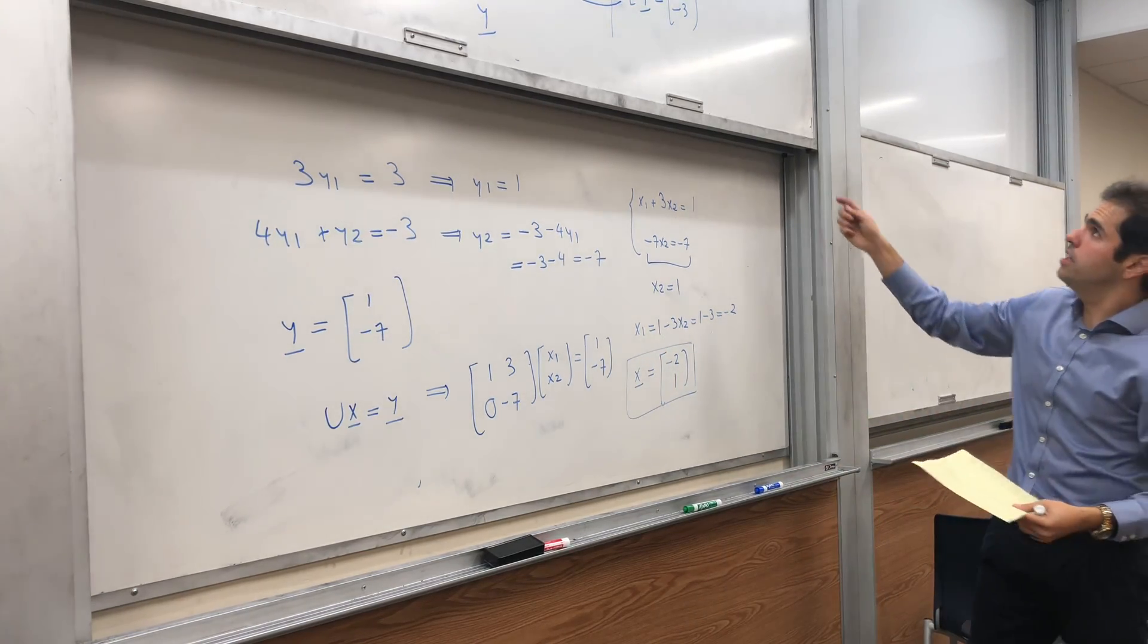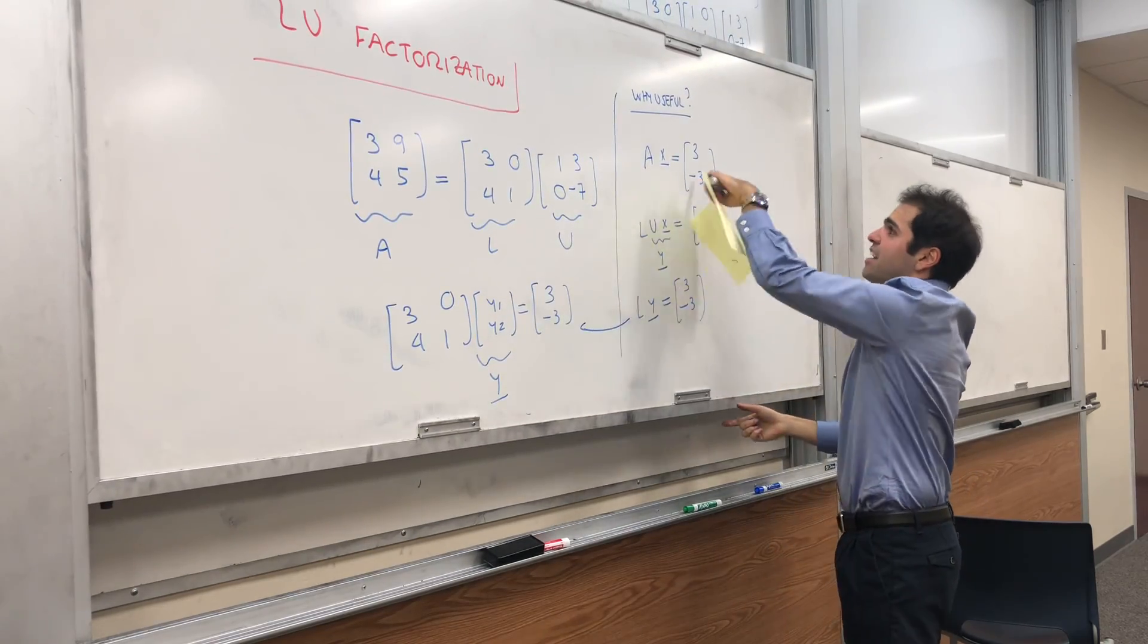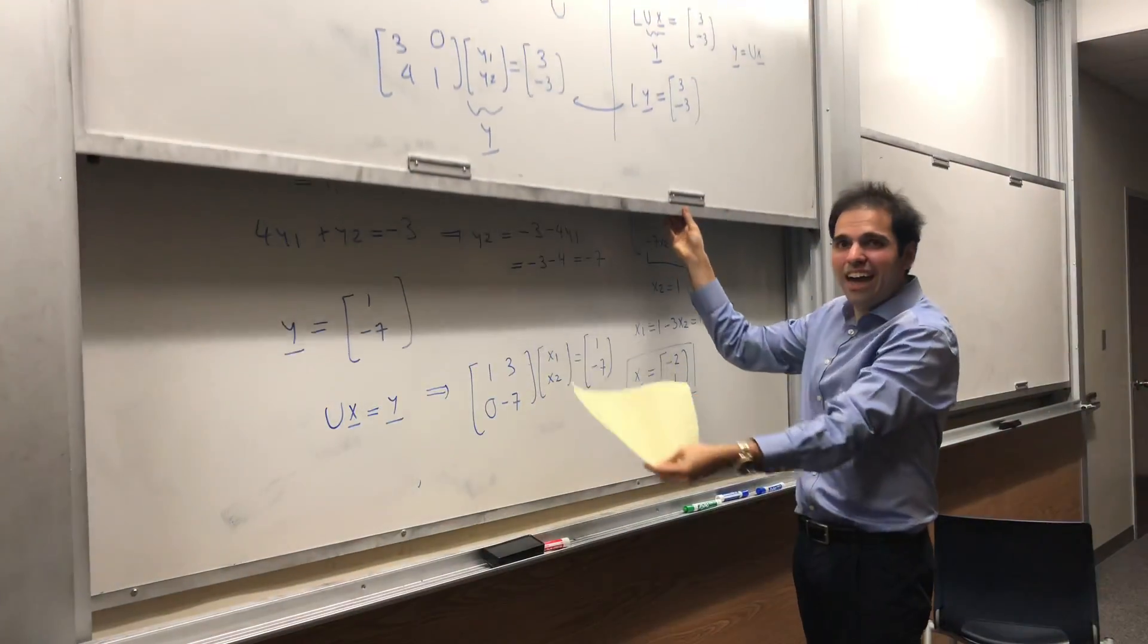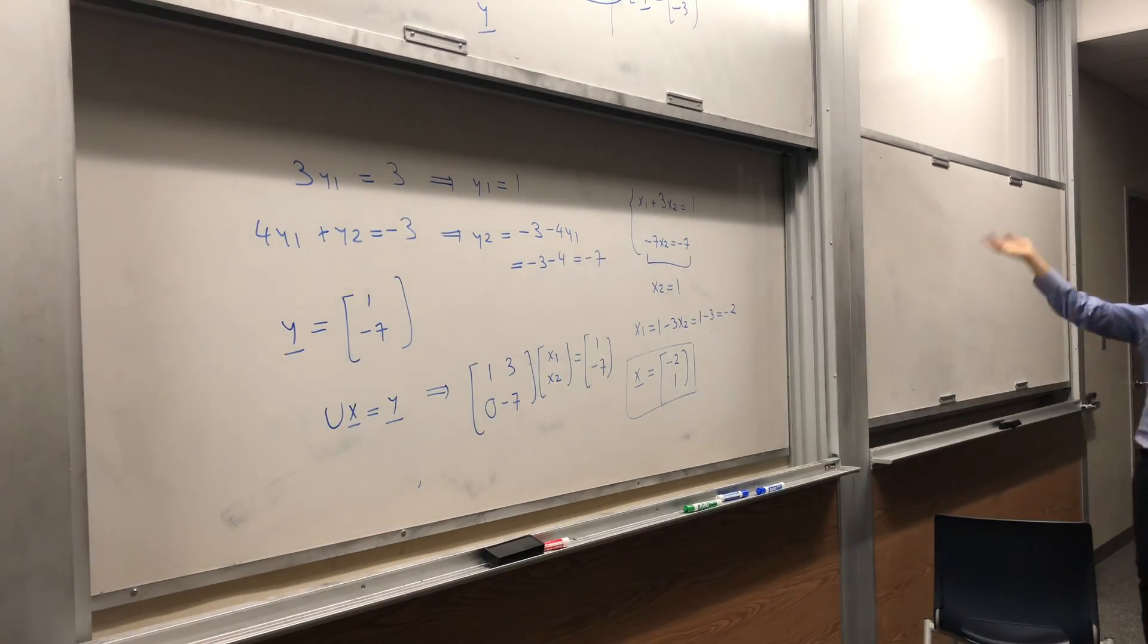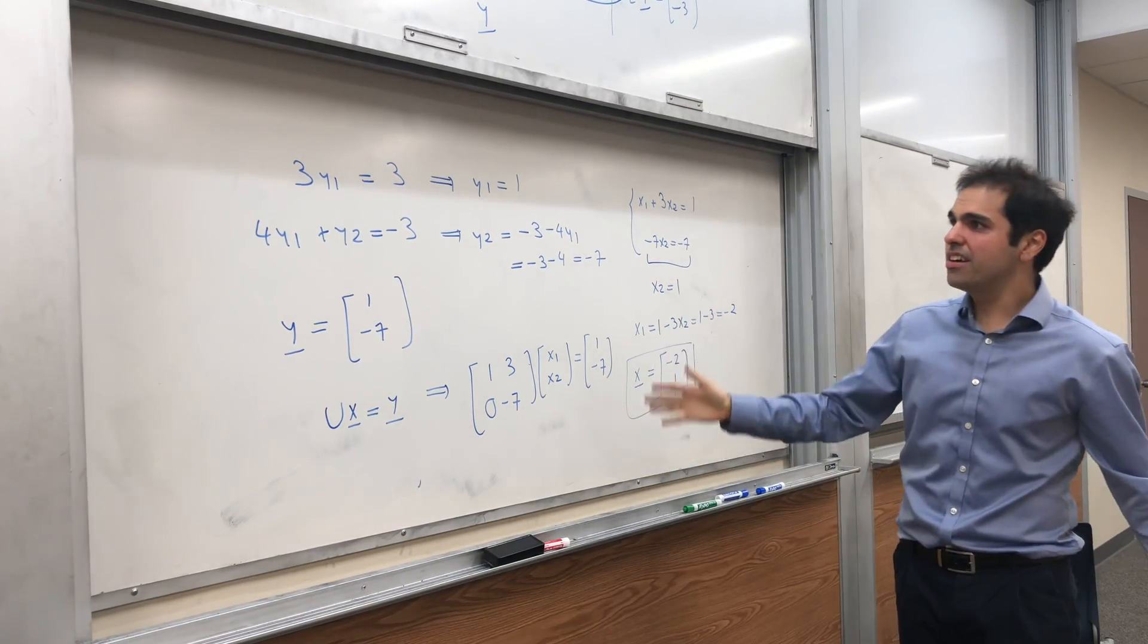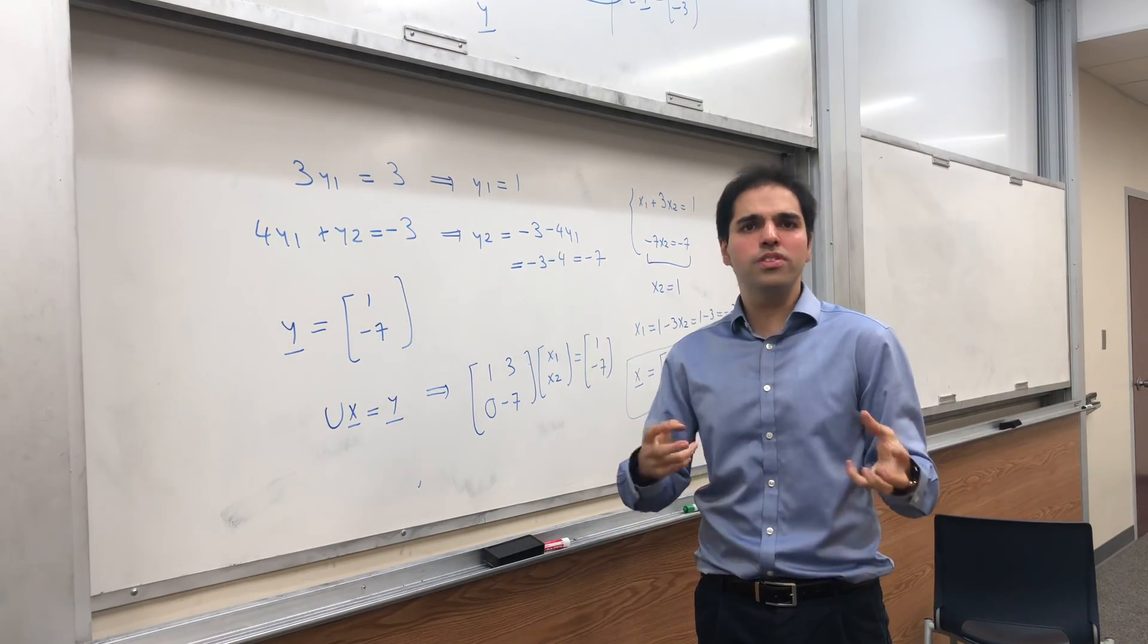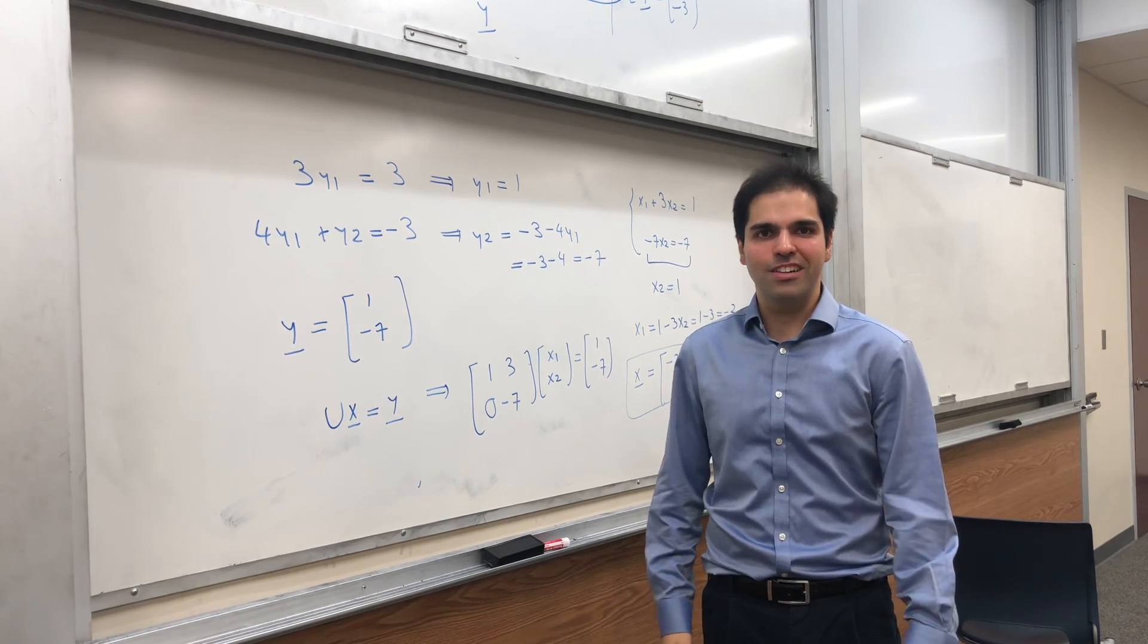And, indeed, you can check that. If X is this, and A is this, then AX is precisely 3 minus 3. Of course, for 2 by 2 systems, it seems kind of crazy. But, you know, the advantage is really for 3 by 3 systems and higher systems because you're essentially taking a super complicated system and you turn it into 2 systems that are much easier to solve. That's why this LU decomposition is very nice.